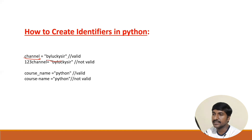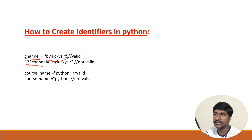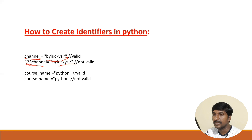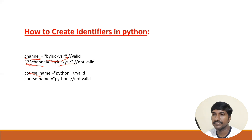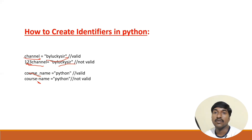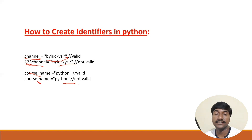Let's see some examples of valid and invalid identifiers. The variable name 'channel_by_luckysir' is valid because it starts with an alphabet. A variable name that starts with a digit is not valid — you should not start any identifier with a digit. 'course_name' with an underscore is valid because the underscore character is allowed in Python to define identifiers, whereas other special characters are not allowed. I hope you understand what an identifier is and what rules to follow when defining identifiers. If you found this useful please hit the like button and share with your friends. Thank you very much.